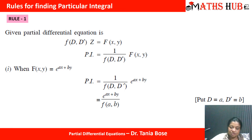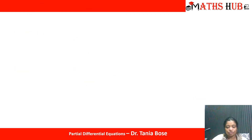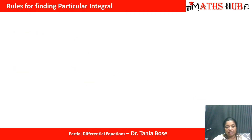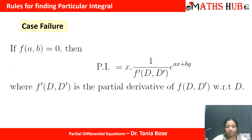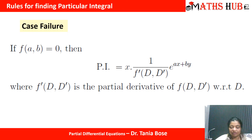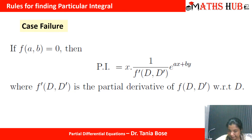This is possible as long as the denominator is not becoming zero. Once the denominator becomes equal to zero, it is a case failure. In that case, we multiply the numerator by x and take the derivative of the denominator with respect to capital D.